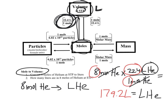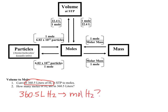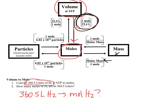Simple as that — to go from moles to volume, just use the mole map. Next: 360.5 liters of hydrogen gas — I need to find how many moles that equals. I started at liters, which is Volume Island, and I need to end at Mole Island. Unlike mass, where I have to calculate molar mass from the periodic table, the numbers here are already given to me.